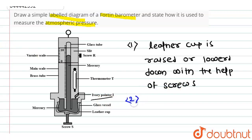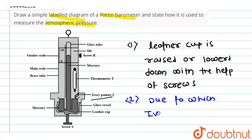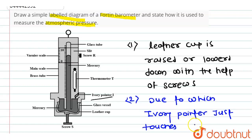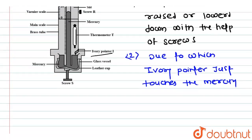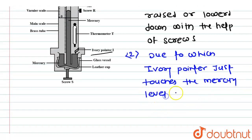Now the second step is: due to which the ivory pointer just touches the mercury level in the glass vessel.